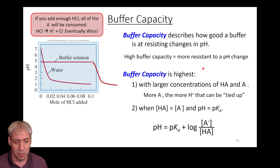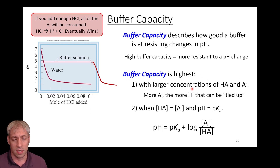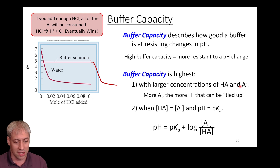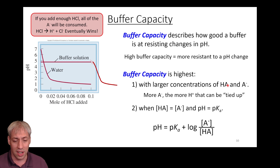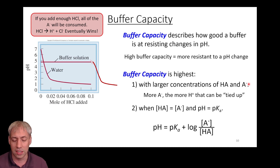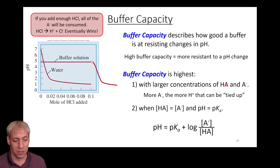To maximize buffer capacity, use larger concentrations of HA and A⁻. The more A⁻ you have, the more H⁺ you can add before it becomes a problem — as long as A⁻ outnumbers H⁺, the buffer holds. Likewise, greater concentrations of HA give you higher buffer capacity. More of both species means the buffer is more resistive toward change.